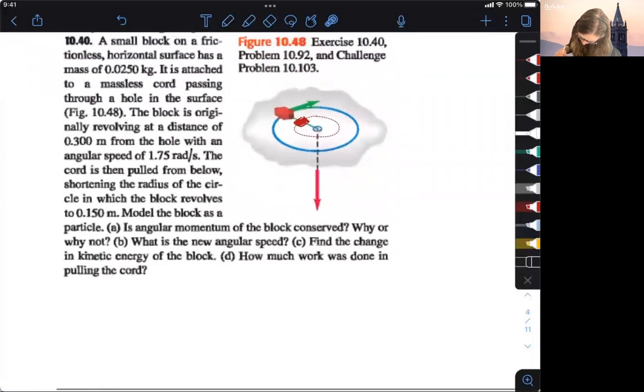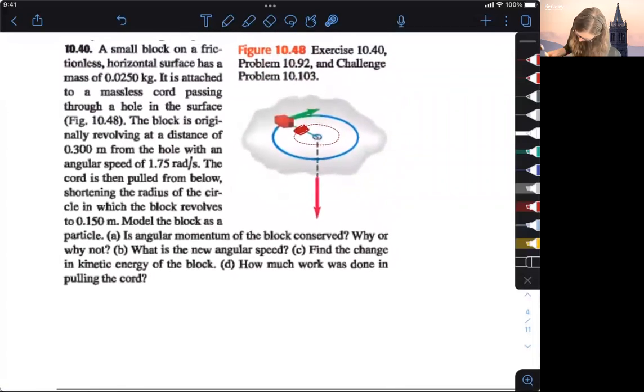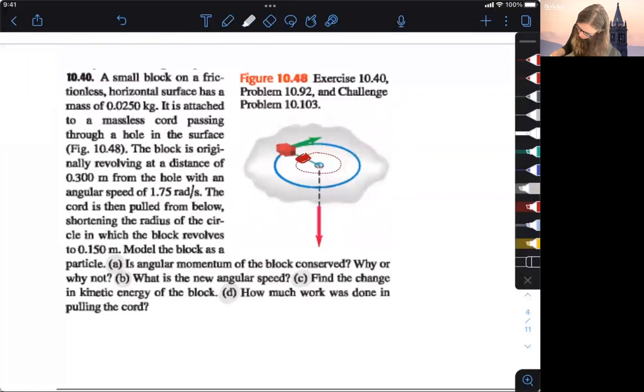Okay, so let's look at what we're being asked to find here. So we want to know, is the angular momentum of the block conserved? Why or why not? What is the new angular speed in this smaller central radius? And then find the change in kinetic energy of the block, and then how much work was done by pulling this chord down. So let's look at what they give us in the problem.